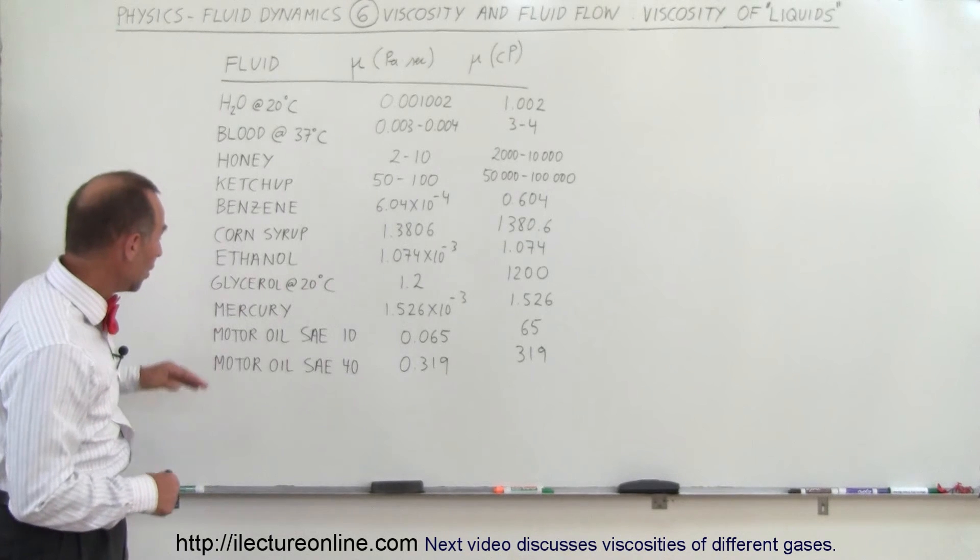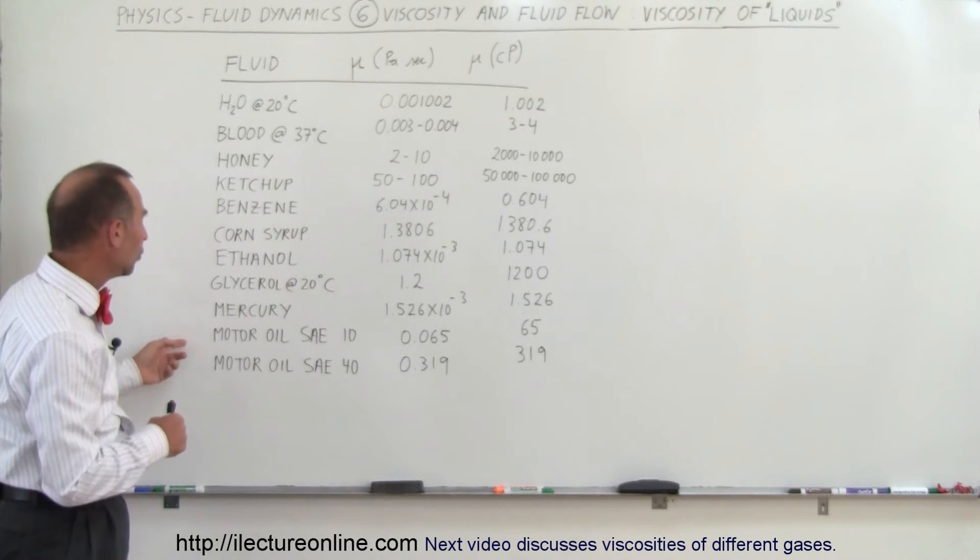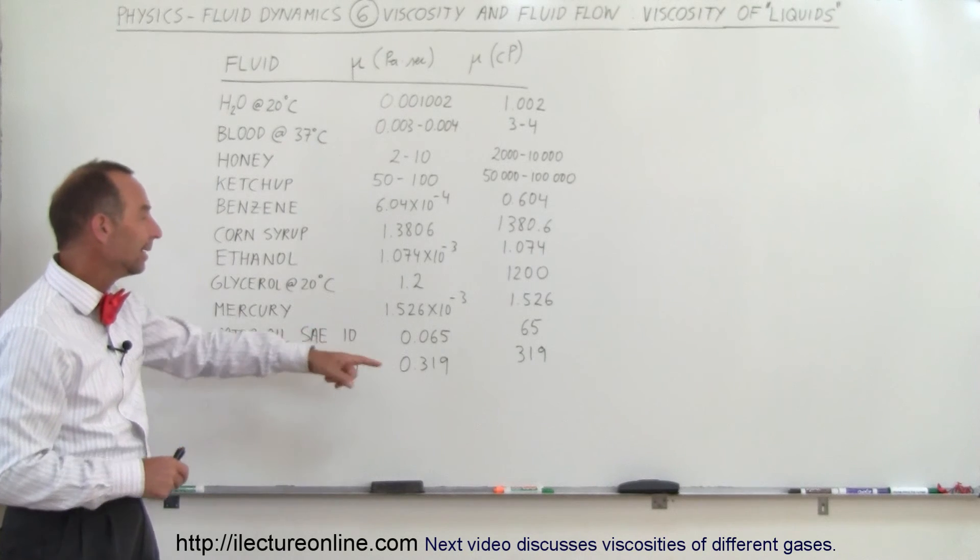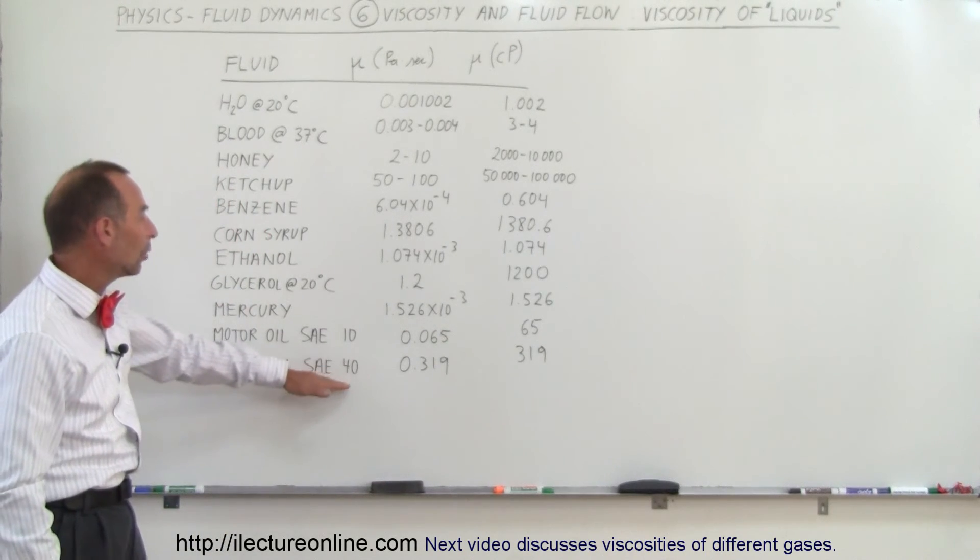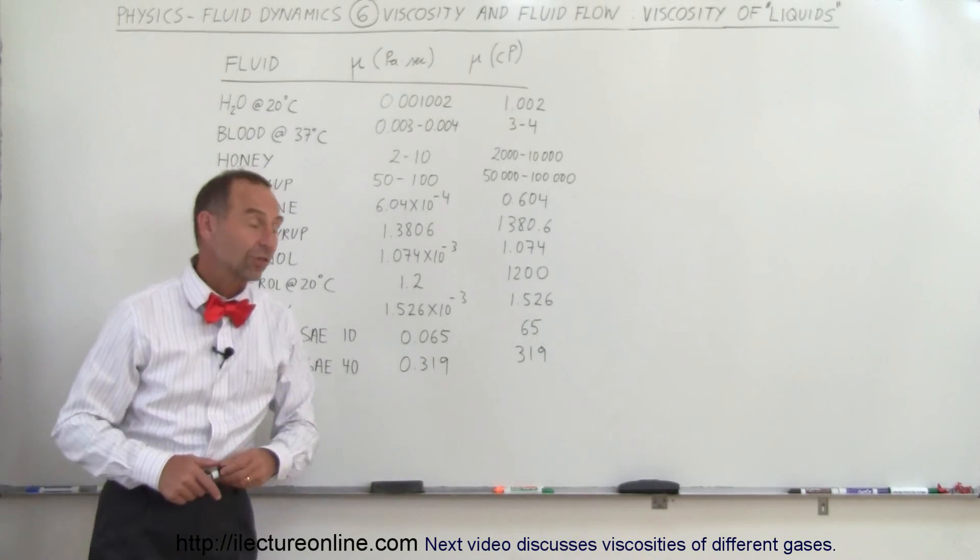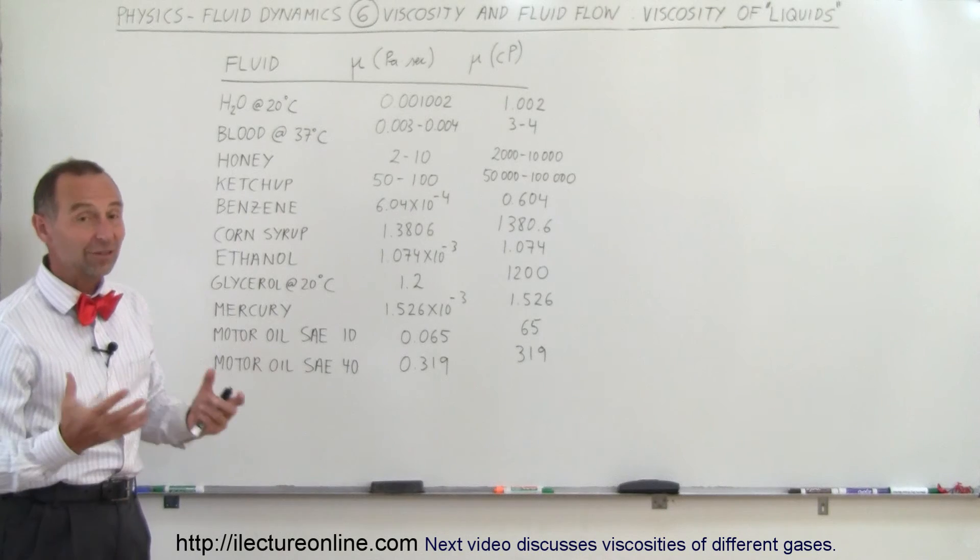Motor oil is kind of interesting. This would be at 20 degrees Centigrade. Notice SAE 10 is about 65 times the viscosity of water, and SAE 40 is about 300 times the viscosity of water. So you can see that for motor oil, the bigger the number, the greater the viscosity. That's what that number really stands for.